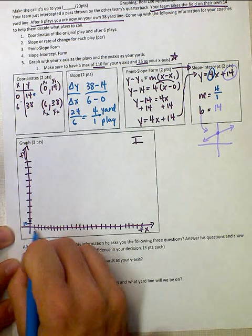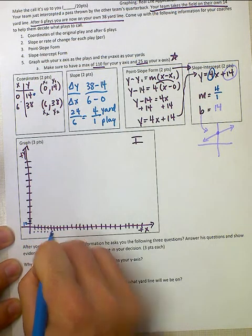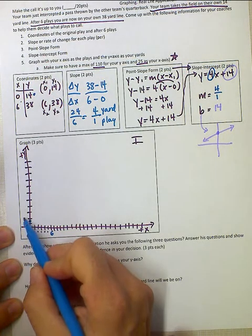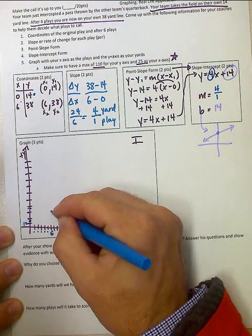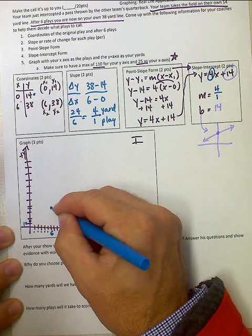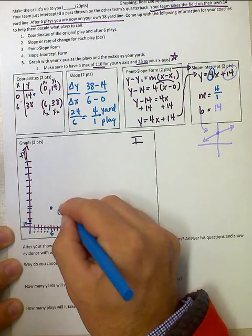And then when I want to plot my 6 and 38, I go 1, 2, 3, 4, 5, 6, 20, 30, a little less than 40, about 38. And I want to plot my 6 and 38 point here.